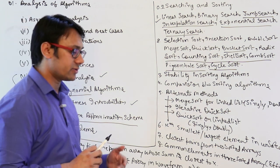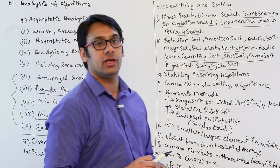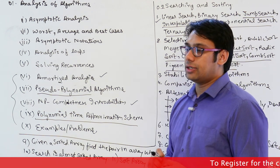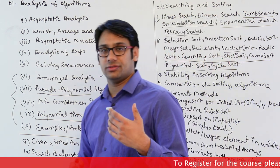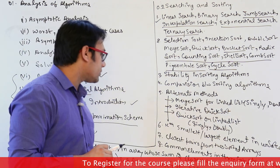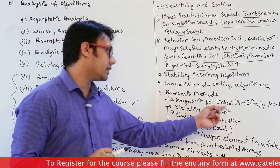For example, merge sort and quick sort are originally designed for arrays. But can you implement them for linked lists? It's not just about implementing—it's about implementing efficiently. This is merge sort for linked lists.